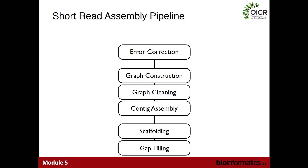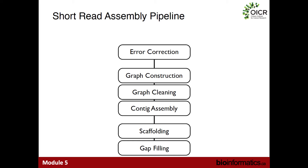Here's the overview of a short read assembly pipeline. We first introduce a novel step called error correction, where we take the reads, try to identify sequencing errors, and fix them. We then build an assembly graph, perform a graph cleaning step where we remove artifacts from that graph, build contigs, and then try to scaffold the contigs together using paired-end information.